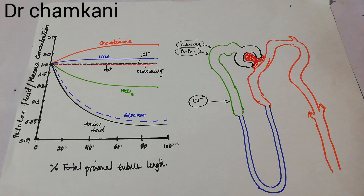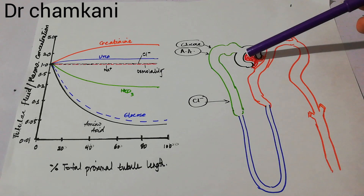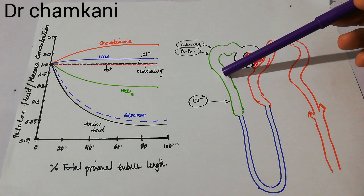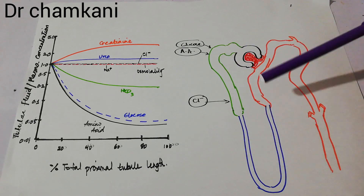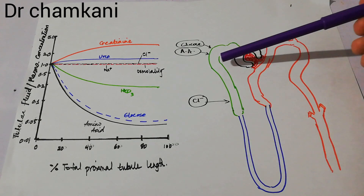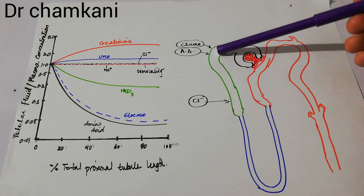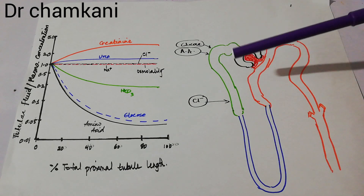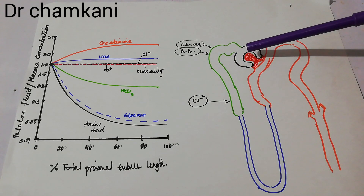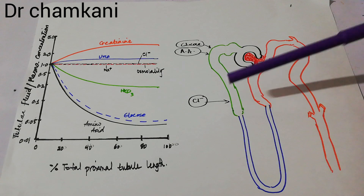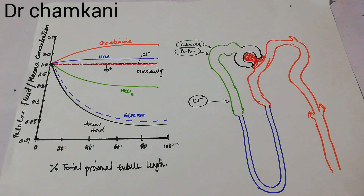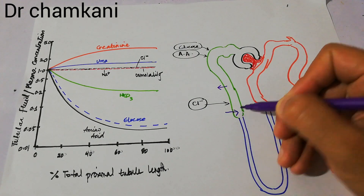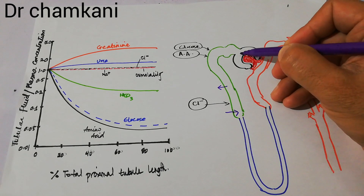Urine formation begins with the filtration process when fluid is filtered in the Bowman's capsule and the filtrate enters the nephron tubules, moving along the tubule. After filtration there is reabsorption — some substances are reabsorbed from the proximal tubule into the blood. There is also secretion, where some substances after being filtered are secreted into the tubule. So some solutes are going out via reabsorption while others are secreted inside.